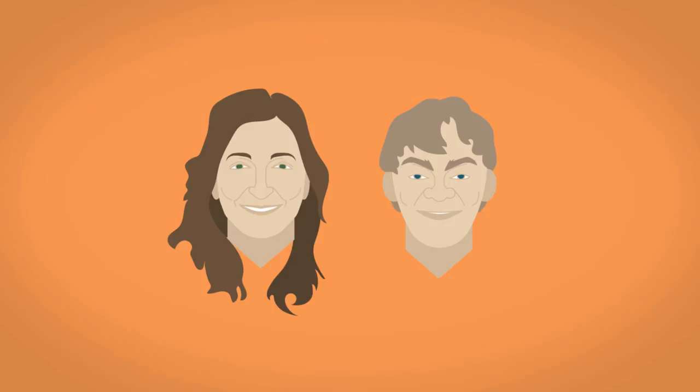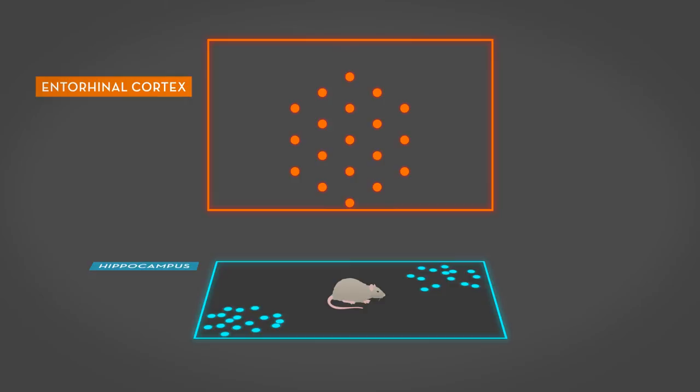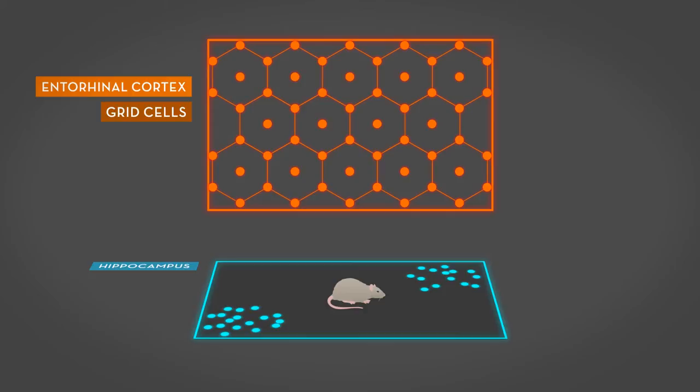Here, they noticed an astonishing activity pattern, where newly discovered cells, they called grid cells, fired each time the rat passed specific locations in the room. From these locations, a distinct pattern appeared, an almost perfect hexagonal grid pattern that covered the entire room, just like the holes in a beehive.